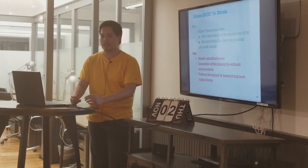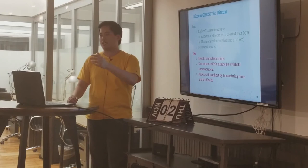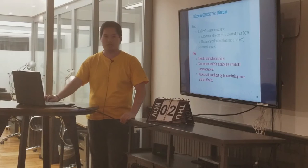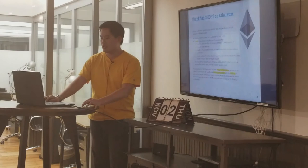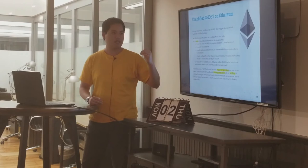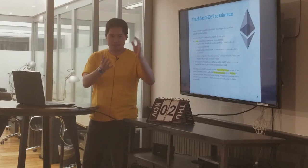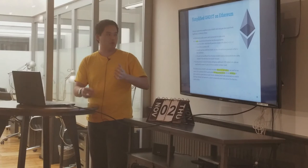As the chain grows, complexity increases further because more and more forks must be considered. That's why Bitcoin GHOST has not been used in today's Bitcoin. However, a simplified version of GHOST is used in Ethereum, where they cap the calculation of uncle blocks to no more than seven generations back — as described in the Ethereum white paper.